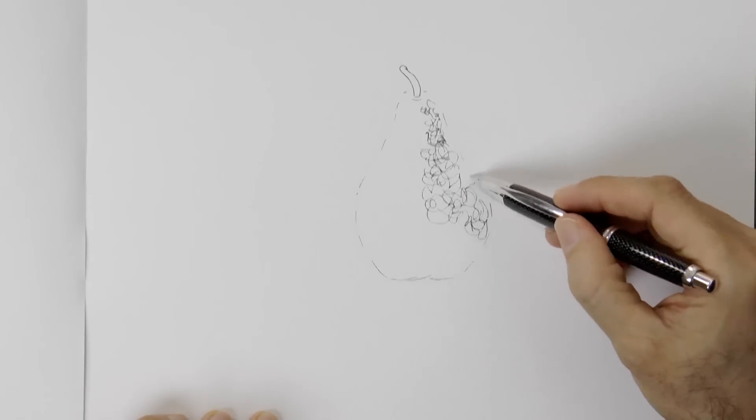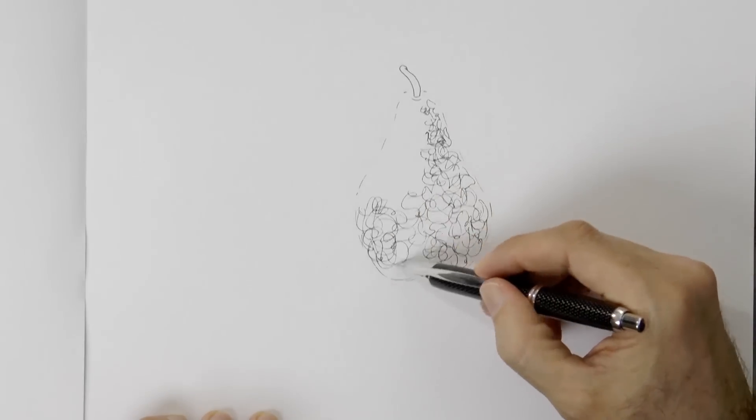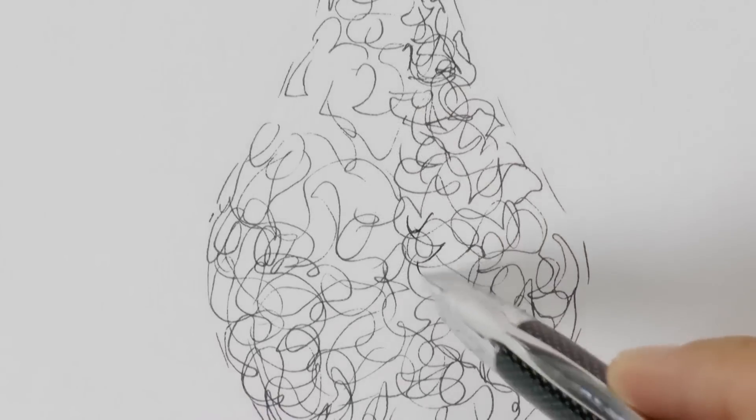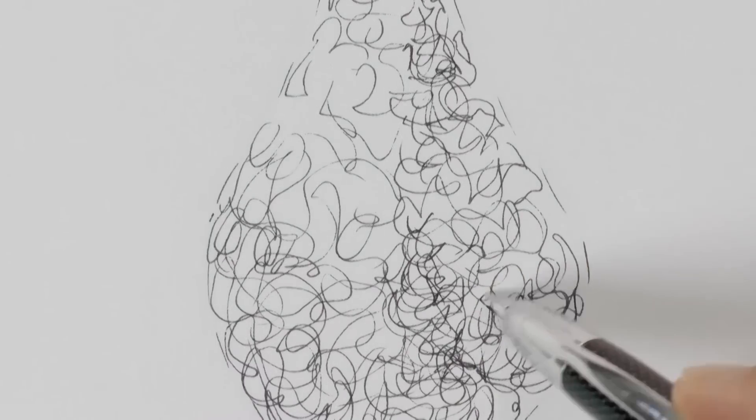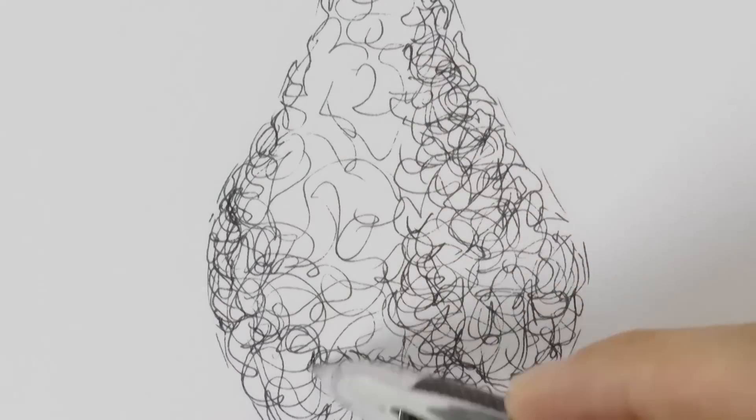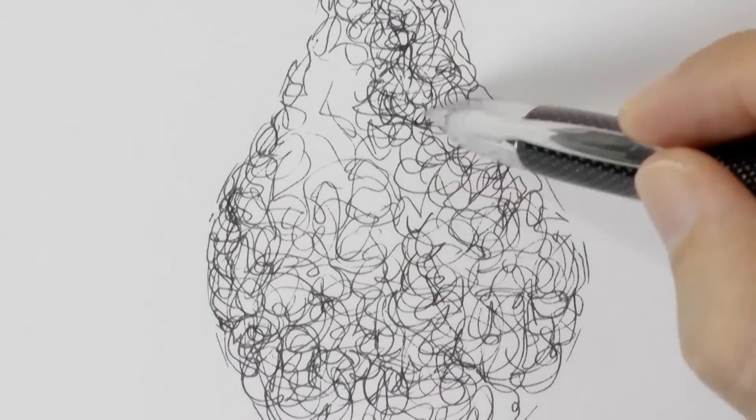And then just doodle! Do this loosely with your own pattern, with your own scribbling method. The areas that you need darker just go over them again with more doodling. This is really fun!